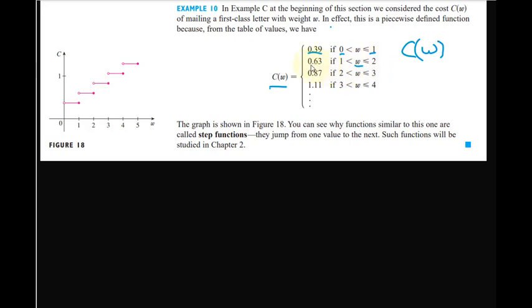If w is between 1 and 2, then we use this formula or this value, 63 cents. If w is between 2 and 3, then we use this formula. And if it's between 3 and 4, we use this and so on. So what is this going to look like?